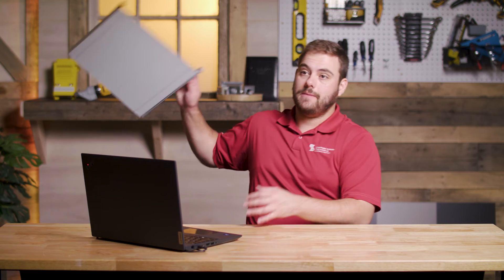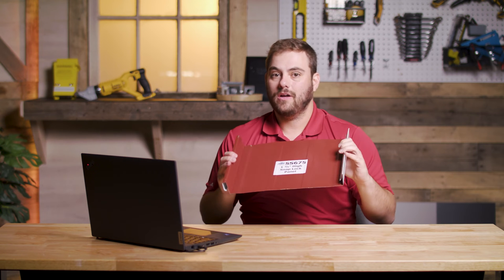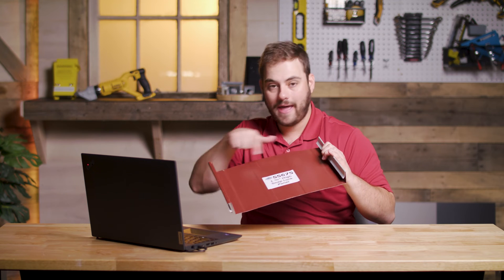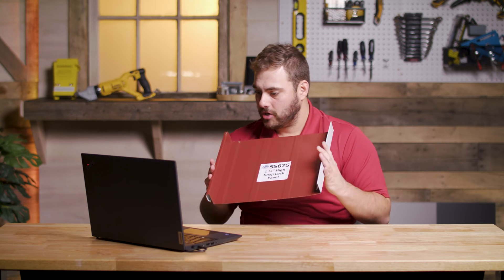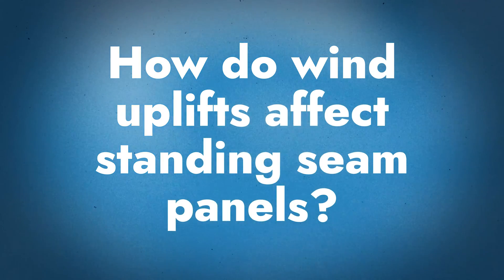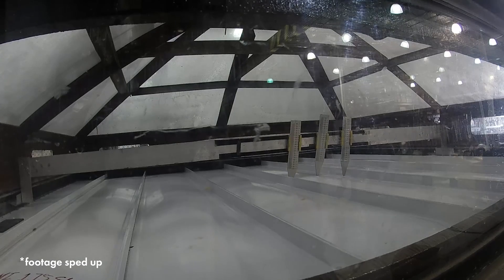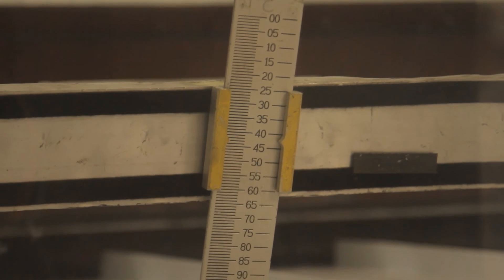Something important to understand is how wind uplifts affect standing seam metal roofs specifically. When you look at a standing seam panel, you have two ribs and a flat part that can be 12, 16, 18 or more inches from rib to rib — that's a lot of area for deflection to occur. When pressure acts on the panel, the center of the panel gets basically pulled up. In testing videos you can see the flat sections raised up significantly off the deck — sometimes deflecting two or three times the height of the standing seam itself.